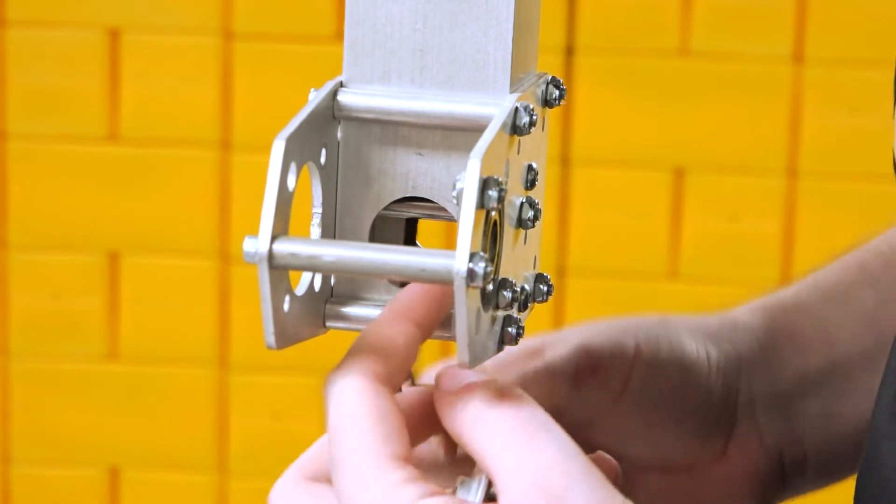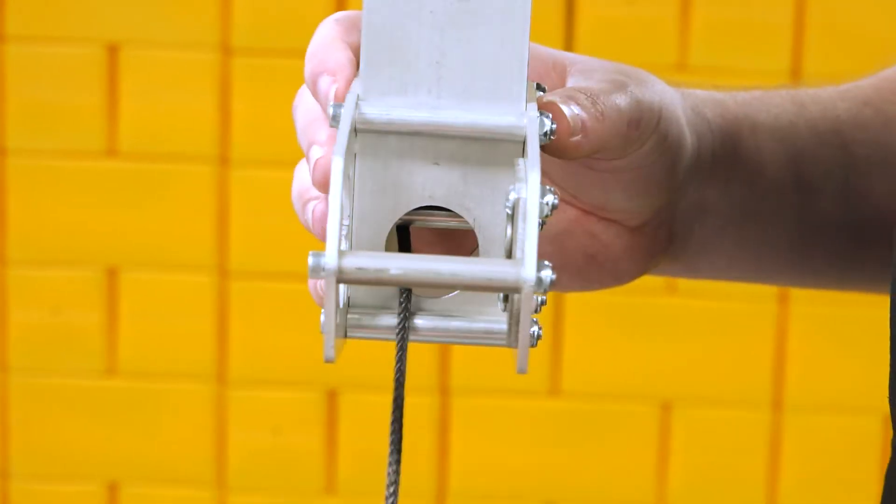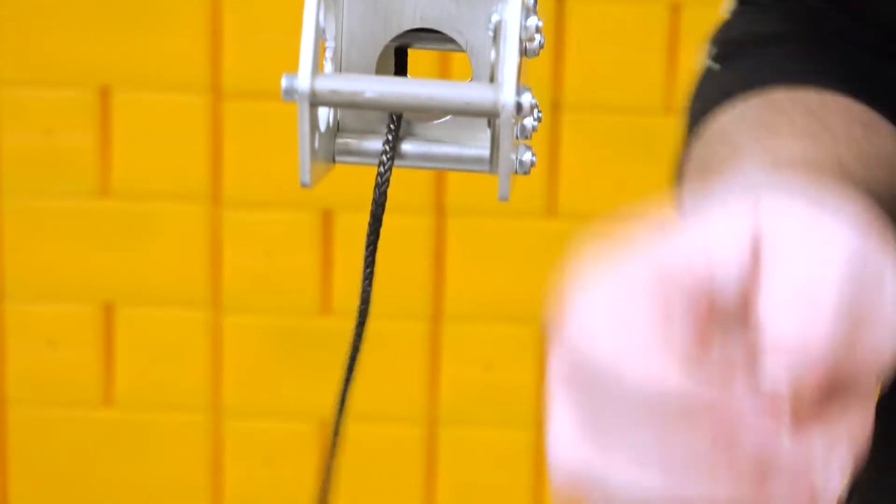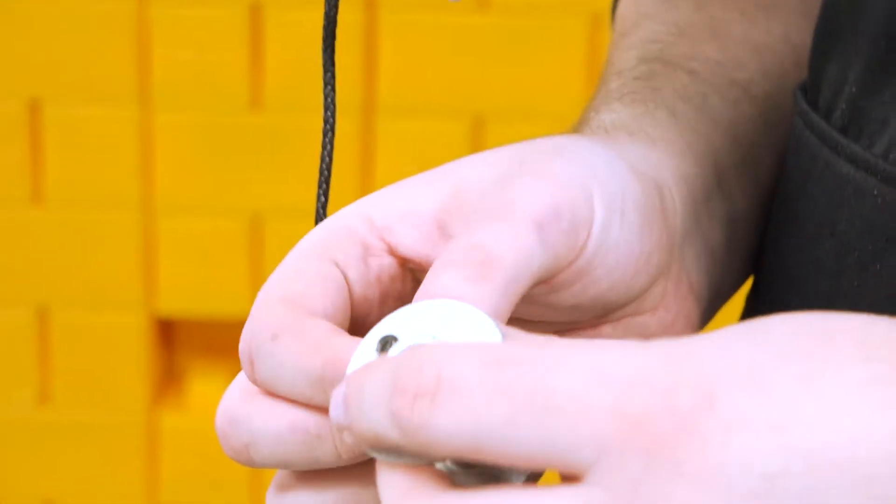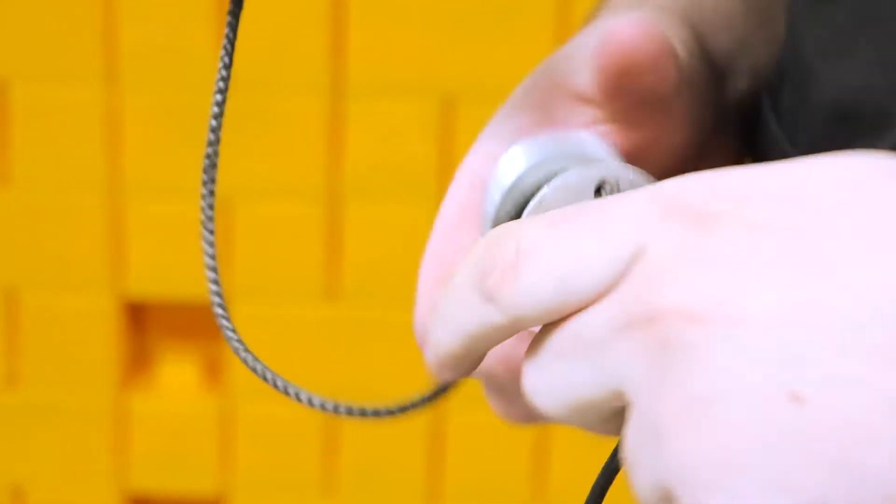First take the string, put it through the hole in the bottom of the box tube, and pull it all the way through. Then take the string, put it through one of the holes in the spool, and pull most of your slack through.